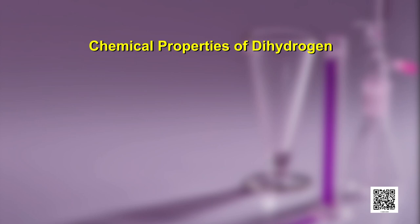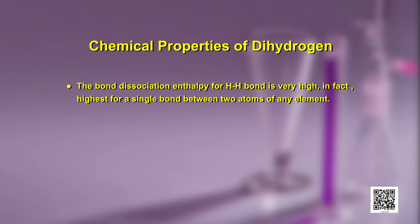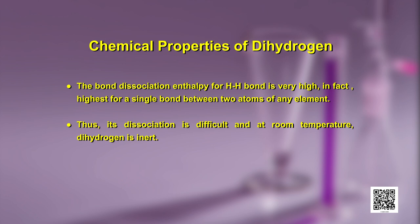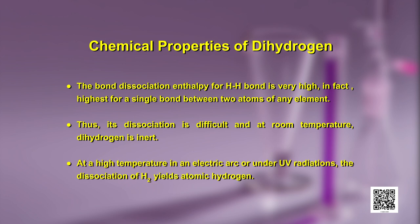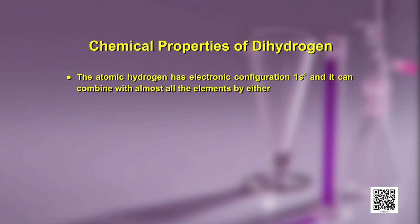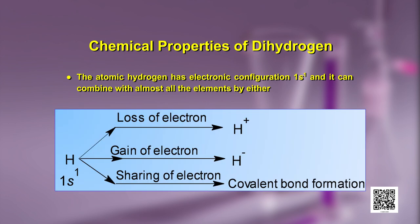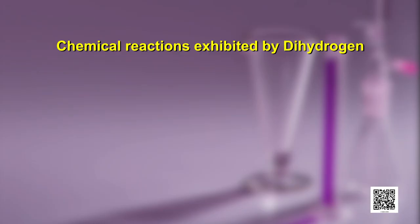Let us now explore the chemical properties of dihydrogen. The bond dissociation enthalpy for the H–H single bond is very high — in fact, it is the highest for a single bond between two atoms of any element. Thus its dissociation is difficult, and at room temperature dihydrogen is inert. At high temperature, in an electrical arc, or under UV radiation, dissociation of H–H yields atomic hydrogen. Atomic hydrogen has electronic configuration 1s¹ and can combine with almost all elements by loss of electron to yield H⁺, gain of electron to give H⁻, or sharing of electron to form a covalent bond.